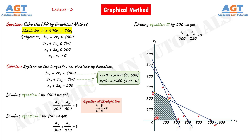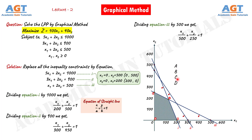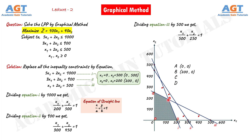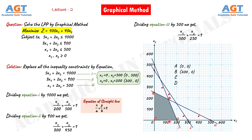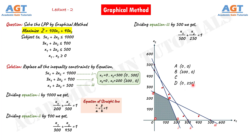Let this extreme corner point be A, this is point B, this is point C, and this is point D. We have found that this is our feasible region, and the four extreme corner points are denoted A, B, C, and D. Now we have to find the values of these extreme points. We can see that the value of point A is (0, 0) — that is, at point A, x1 is 0 and x2 is also 0. The value of point B is (200, 0). We don't know the value of point C yet; since we are doing the graph on a plain sheet, we have to find the position of point C through calculation. The value of point D is (0, 250).